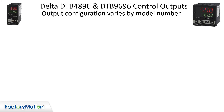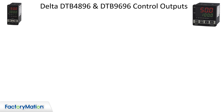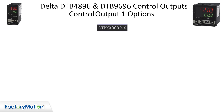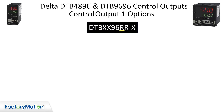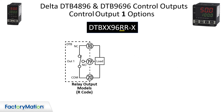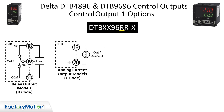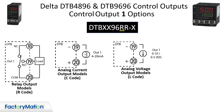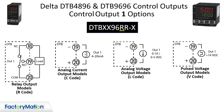Output configuration varies by model number. The first alpha character in the model number designates Output 1. Output 1 can be a relay, analog current, analog voltage, or a 14-volt DC pulse output to drive a solid state relay.